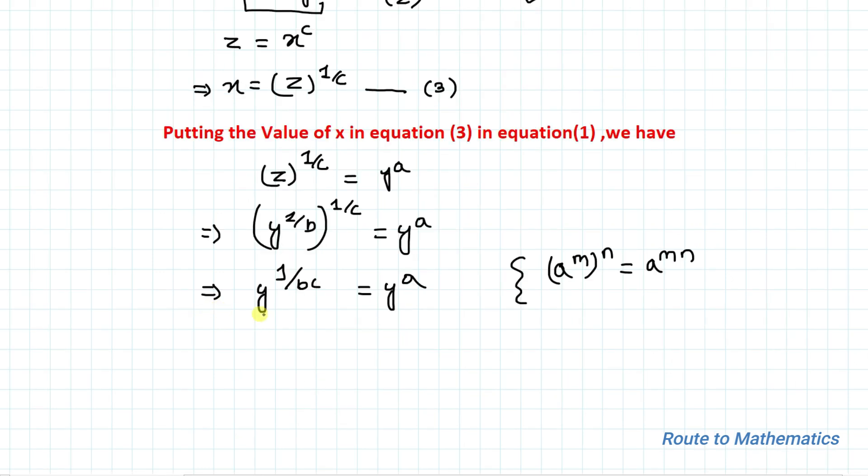Here you can see that bases are the same on both sides of the equation: y and y. So this means we can equate the powers. We have 1 by bc equals a.